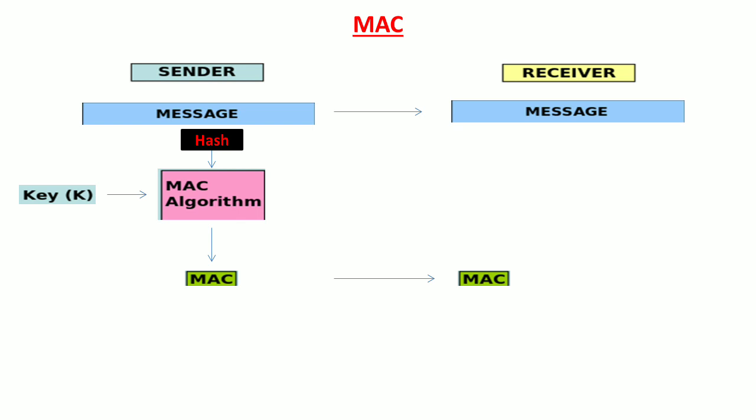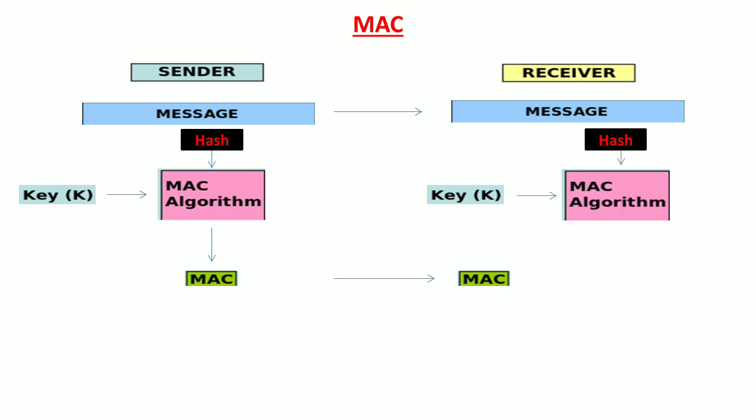The sender then sends the message along with its MAC. The receiver then performs similar steps: he hashes the message and uses the same symmetric key — which is shared on both sides — to generate his own MAC. The receiver then compares both MACs: the MAC received from the sender and the MAC he has generated himself. If both MACs are similar, it means the message has come from a trusted party and has not been changed.